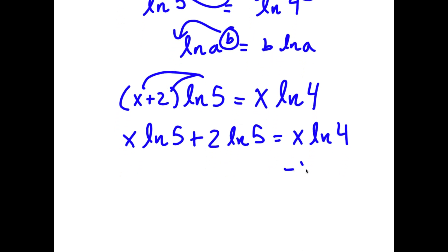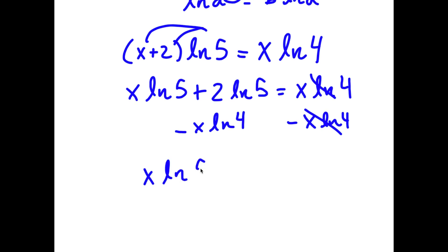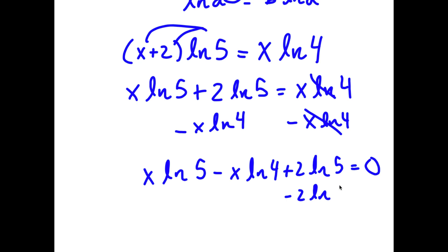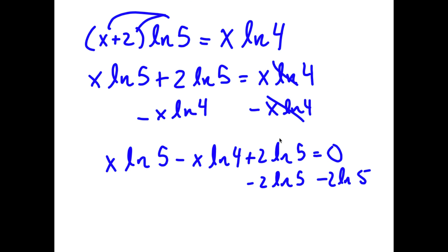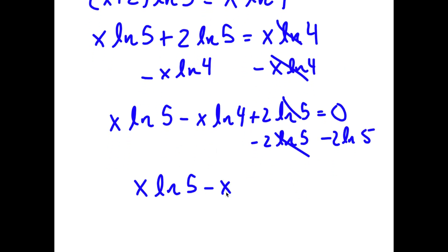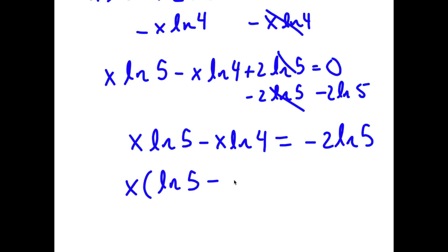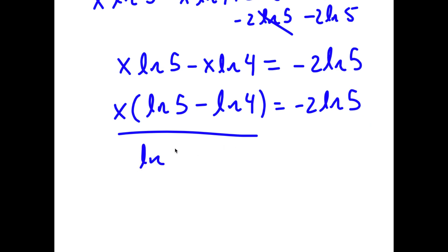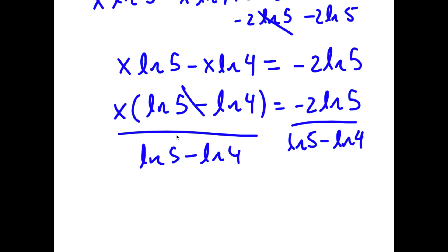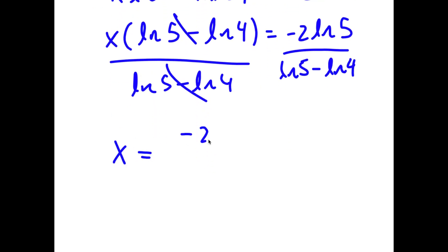From here I'm going to subtract x times ln 4 on both sides. So I have x times ln 5 minus x times ln 4 plus 2 times ln 5 is equal to 0. Subtracting 2 ln 5 on both sides gives x times ln 5 minus ln 4 is equal to negative 2 times ln 5. Factoring out x, I get x times ln 5 minus ln 4 equals negative 2 ln 5. Dividing both sides by ln 5 minus ln 4, these cancel out and I have x is equal to negative 2 ln 5 over ln 5 minus ln 4.